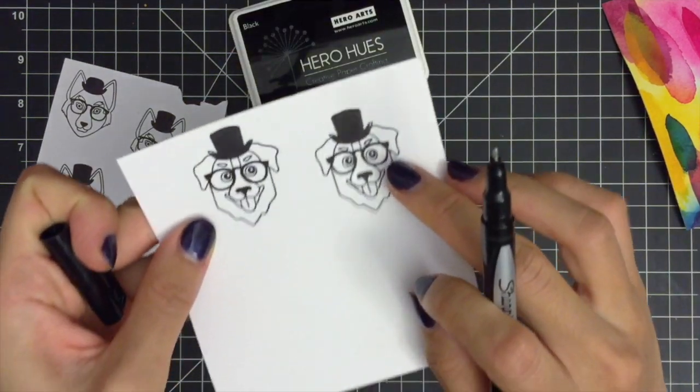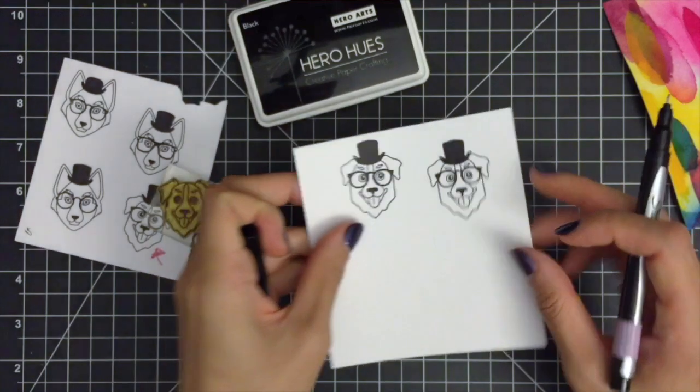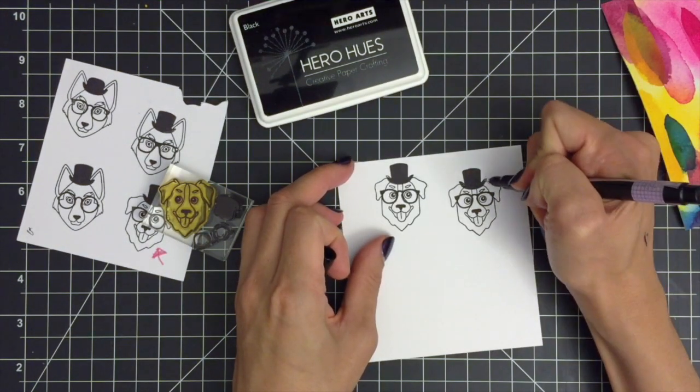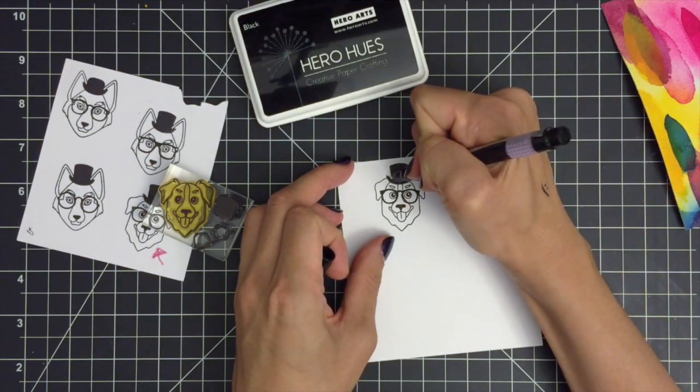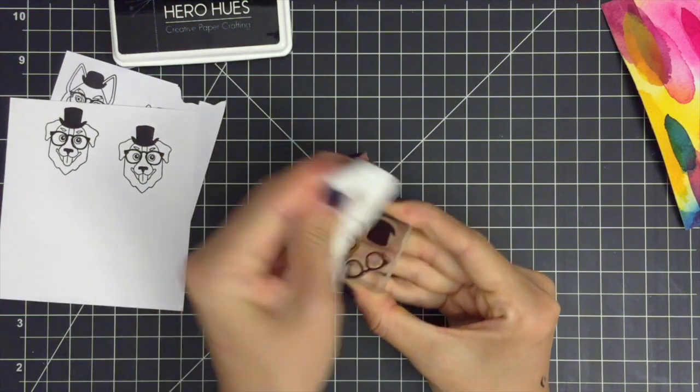Here I'm fixing my stamped image with black pen. Before I move on to the next step, I wanna show you how I clean my stamps. Once I'm done stamping, I clean my stamps with baby wipes or an absorber towel.